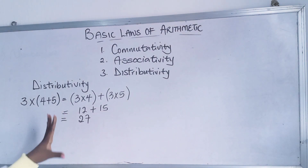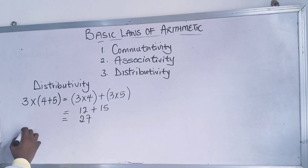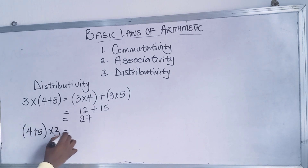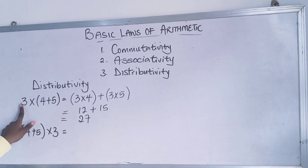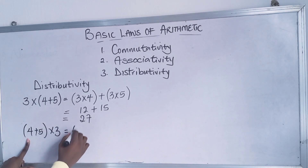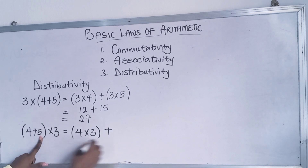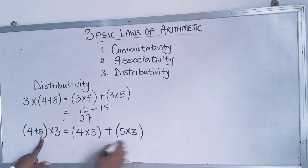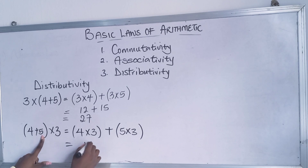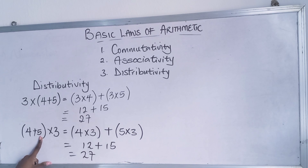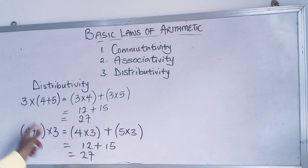If we do the reverse case, you'd have (4 plus 5) times 3, which distributes as 4 times 3 plus 5 times 3. So 4 times 3 is 12, plus 5 times 3 is 15, giving you 27. This gave the same answer — 27 either way. This shows multiplication distributed from the left and from the right both give the same result.